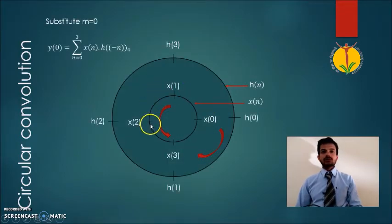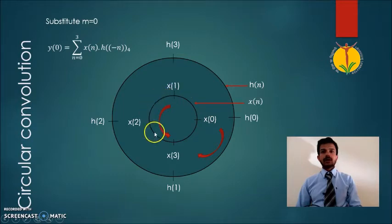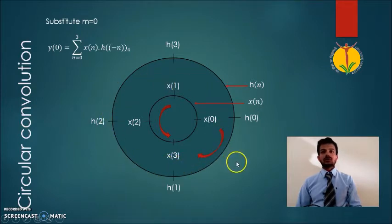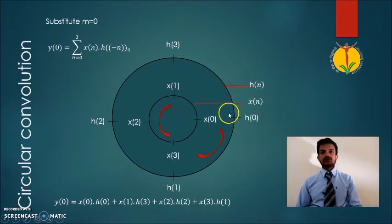We draw x of n as the inner circle and h of minus n as the outer circle. The samples of x of n are written along the anticlockwise direction, while the samples of h of n are plotted along the clockwise direction — so the outer circle is the folded version of h of n. We then perform individual multiplication and addition to obtain the convolution of x of n and h of n.